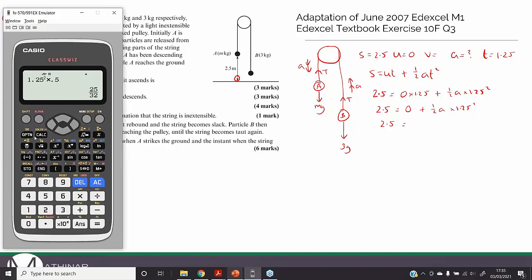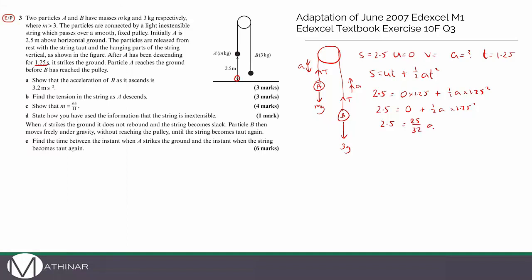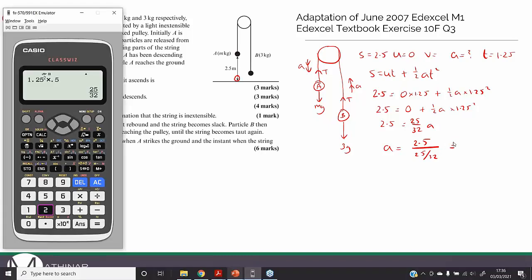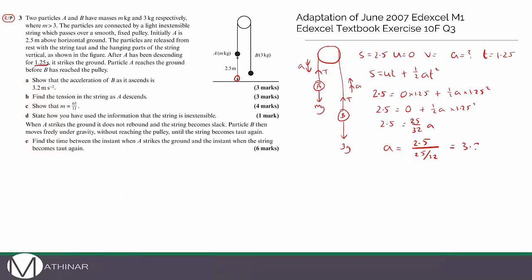Working out ½ × 1.25² gives 25/32. So to find a: 2.5 ÷ (25/32) = 2.5 × (32/25) = 16/5 = 3.2. The acceleration is confirmed to be 3.2 m/s², so part A is done.